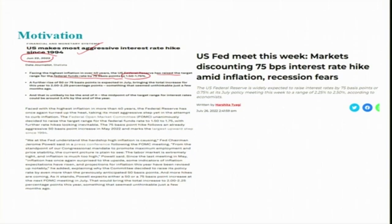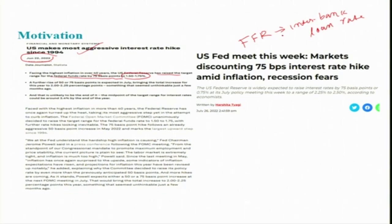Facing the highest inflation in over 40 years, the US Federal Reserve raised the target range of the Fed fund rate by 75 basis points to 1.50–1.75%. What we can see is that the Fed fund rate is the interbank rate — the interest rate on overnight loans of reserves from one bank to another. The central bank is fixing it at a target range, because this rate is determined by the demand and supply of reserves by the banking system.